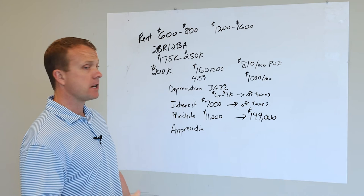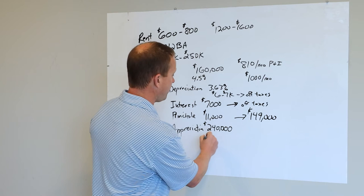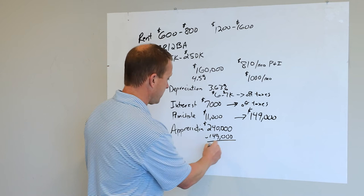you bought a $200,000 condo times 5%, that's $40,000 over a four year period. So that condo that you paid $200,000 for is now worth $240,000. You owe $149,000 on it.